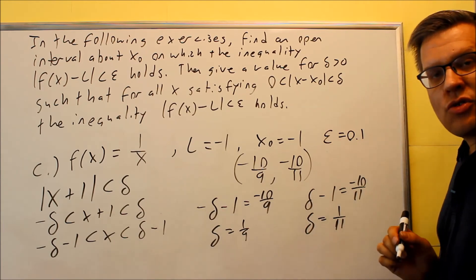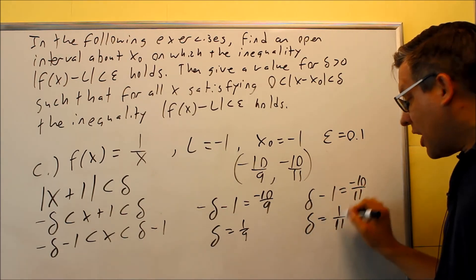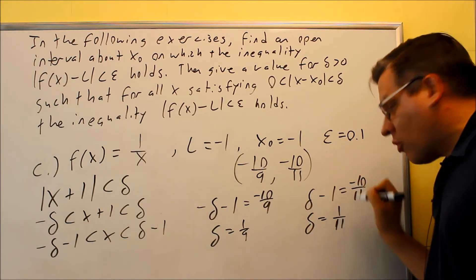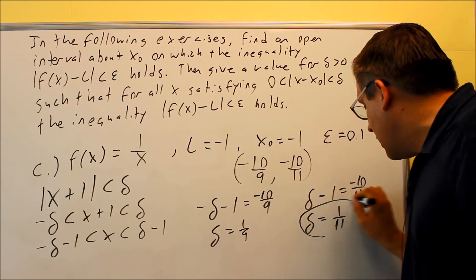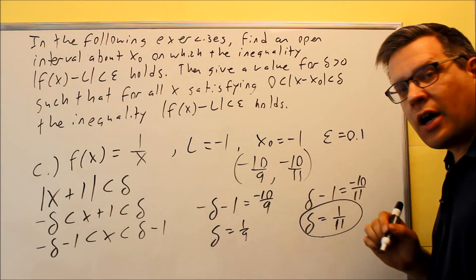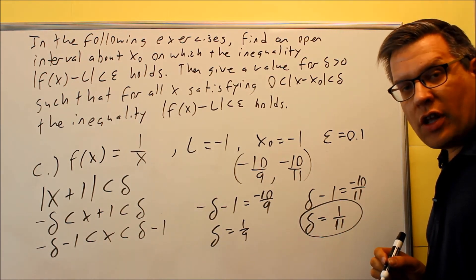You want the one that's smaller. So this one is actually smaller because you're dividing by a larger number. The larger the denominator, the smaller the overall fraction is going to be. So this is the one you want to pick. You always want to pick the smaller one because you're trying to minimize the error that you have in the x direction. So that's why our answer's got to be 1 over 11.